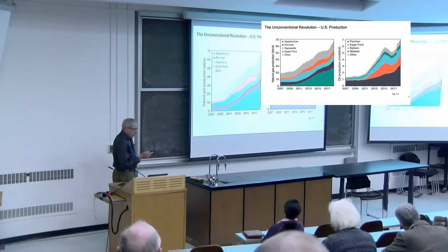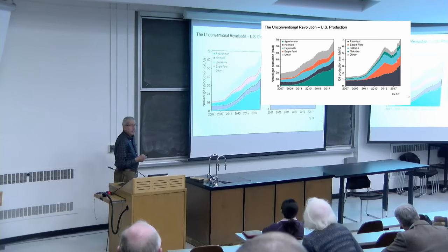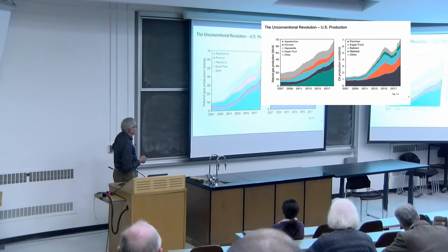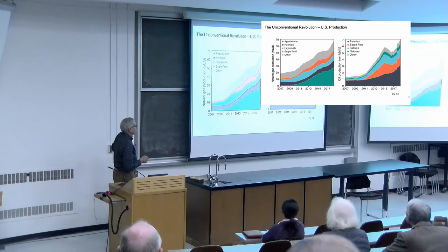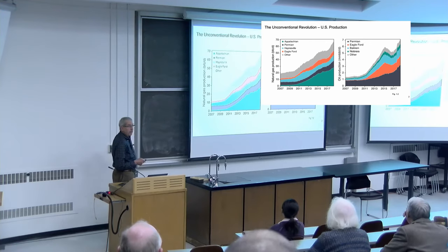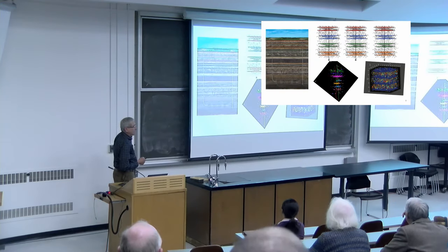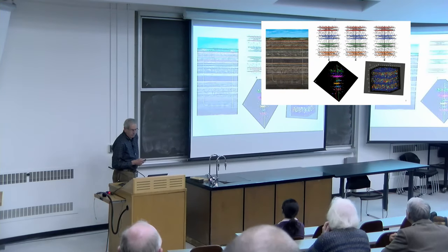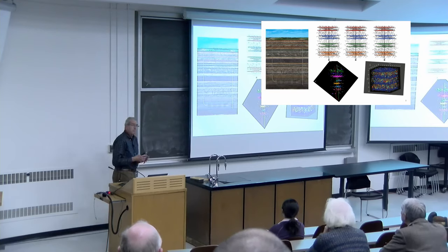The unconventional revolution has had a big impact both in the United States and Canada. These are numbers for the U.S. showing natural gas production on the left and oil production on the right over about a 10-year period, and it's truly remarkable. The natural gas alone has had a tremendous effect, reducing CO2 emissions.